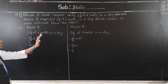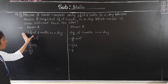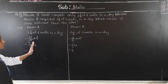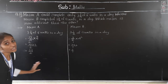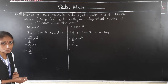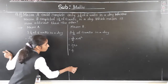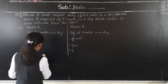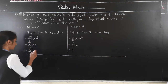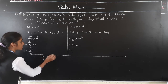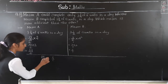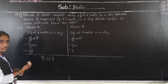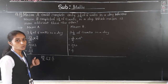Which Madison is more efficient? For Madison A we got 39 upon 2, and for Madison B we got 6. To compare, the denominators must be the same. The denominators are different, so we need to find the LCM. The LCM of 2 and 1 is 2, so let's make the denominator 2 for both.